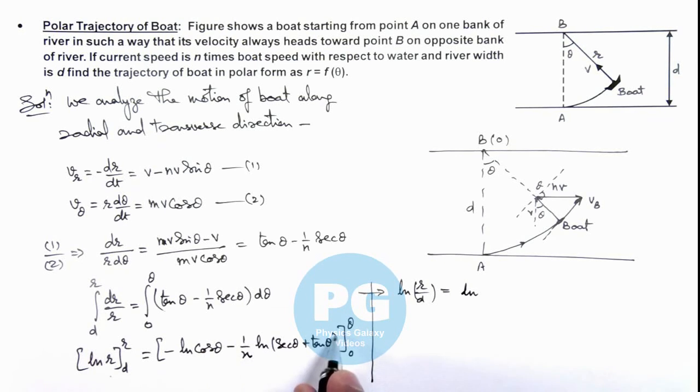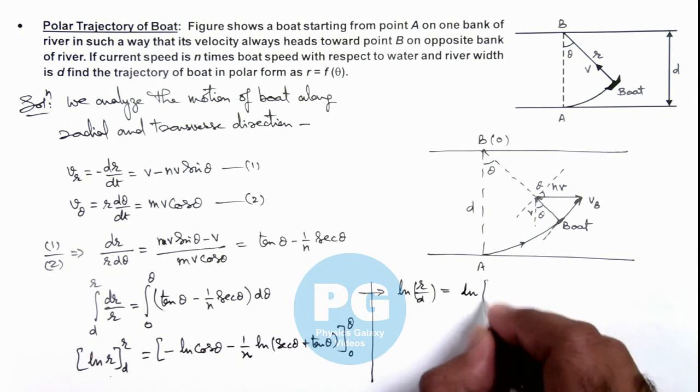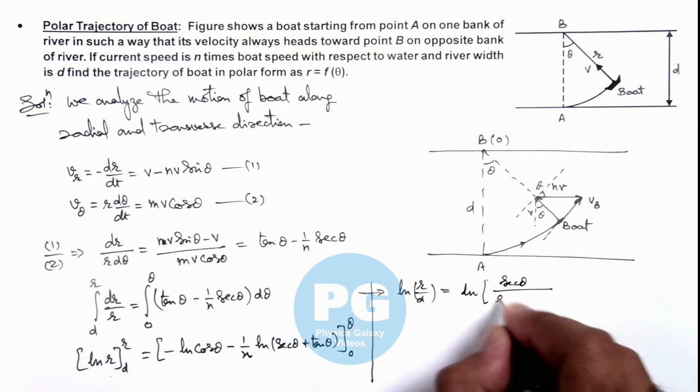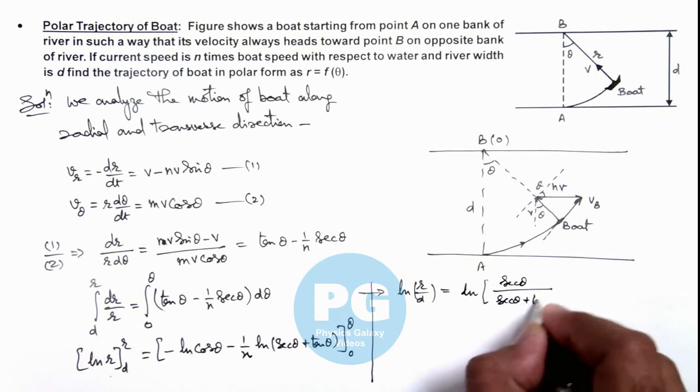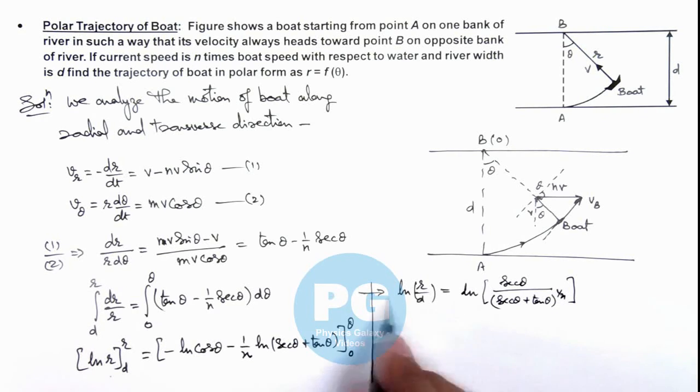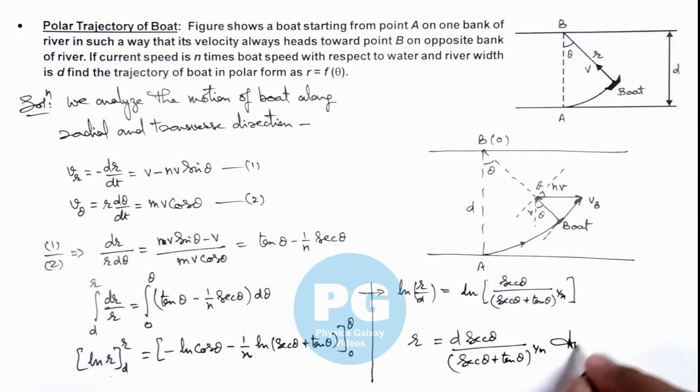So this 1 by n we can take over the power of sec theta plus tan theta. So this will be ln of sec theta divided by sec theta plus tan theta, whole power 1 by n. And if we take anti-log on both sides, we are getting the value of r which is d sec theta divided by sec theta plus tan theta to the whole power 1 by n. So this will be the final result.